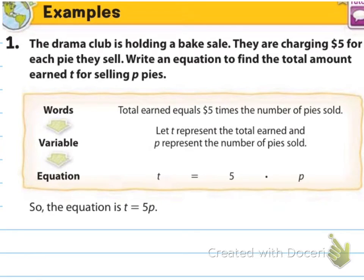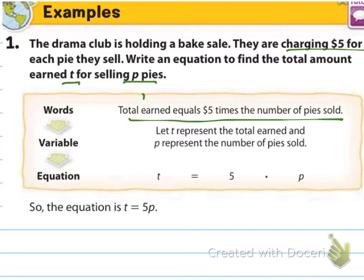Number one says the drama club is holding a bake sale. They are charging $5 for each pie they sell. Write an equation to find the total amount earned, T, for selling P pies. The total earned equals 5 times the number of pies sold. Let T represent the total earned and P represent the number of pies sold, so T equals 5P.